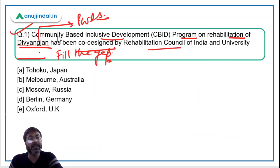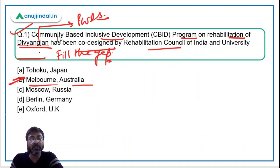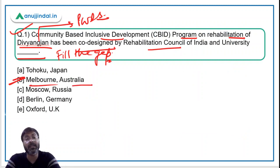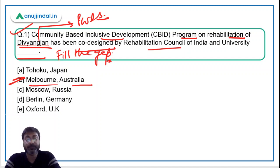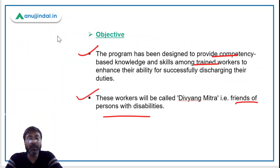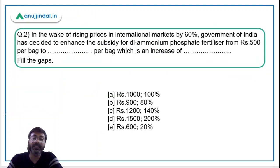So the correct answer here will be Option B: University of Melbourne, Australia. The University of Melbourne, Australia, and the Rehabilitation Council of India have together organized this program. Now let's move ahead to question number two.